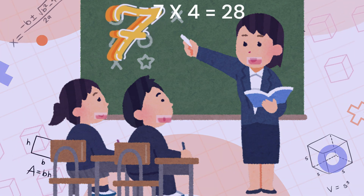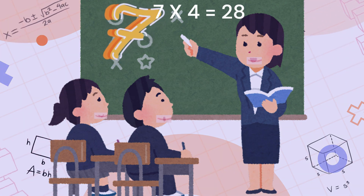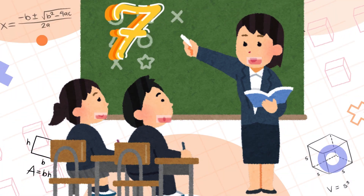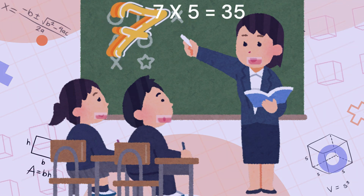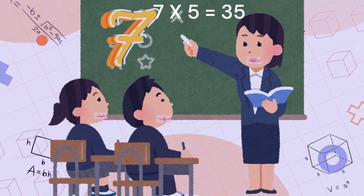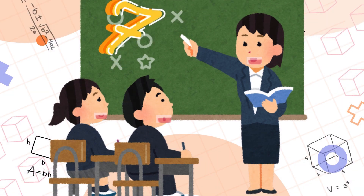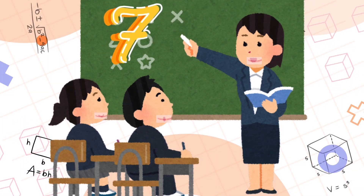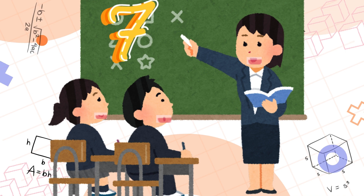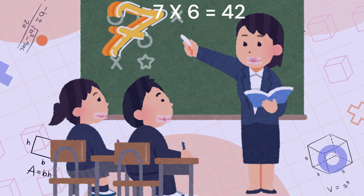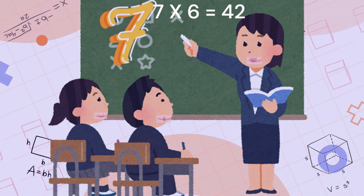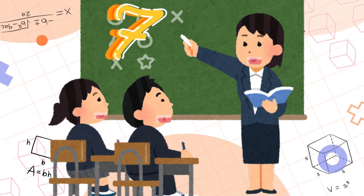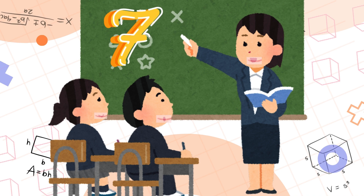7 fours are 28, 7 fives are 35, 7 sixes are 42.